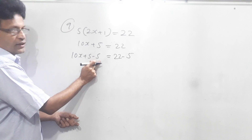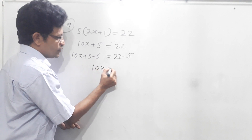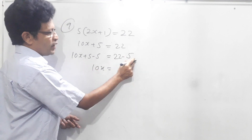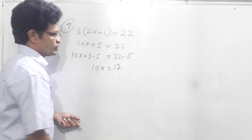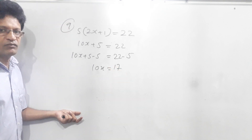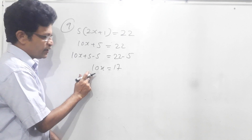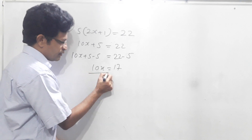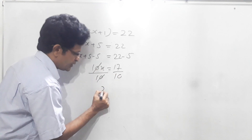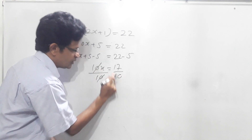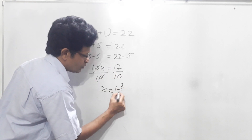Plus 5 and minus 5 cancel, so 10x equals 17. Now we have to find the value of x, so we have to divide this side by 10, then this side also divide by 10. 10 and 10 cancel, so x equals 17 over 10.